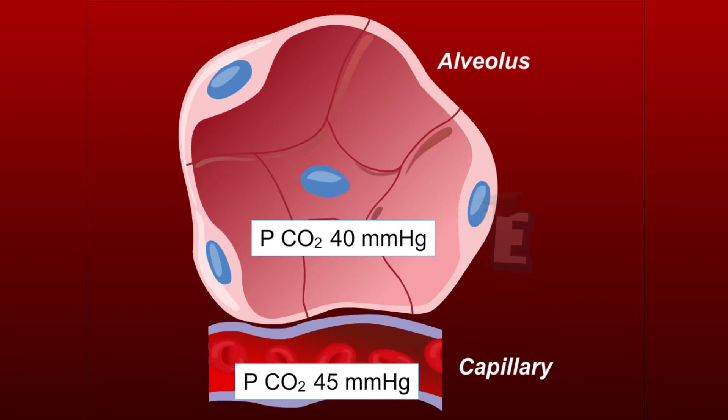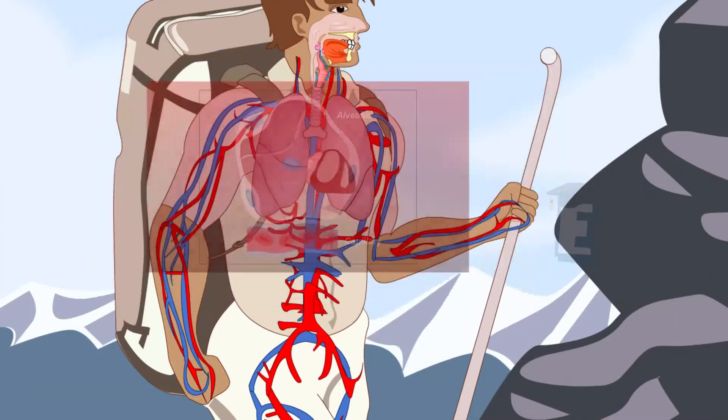Thus the carbon dioxide will diffuse from the blood vessel to the alveolus to be carried out of the body when expiration happens.